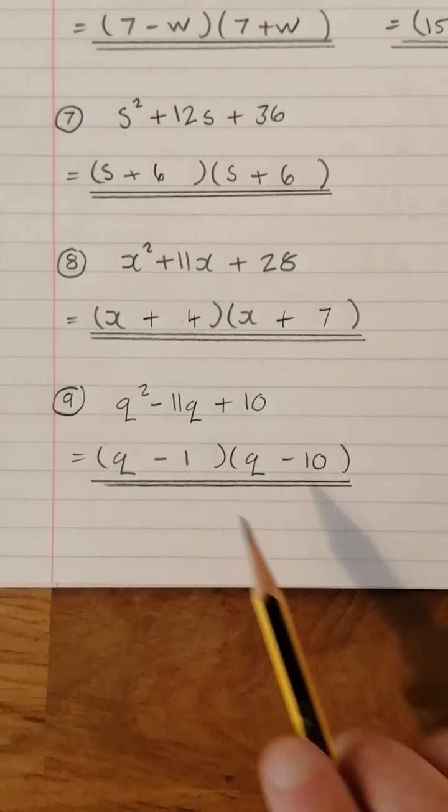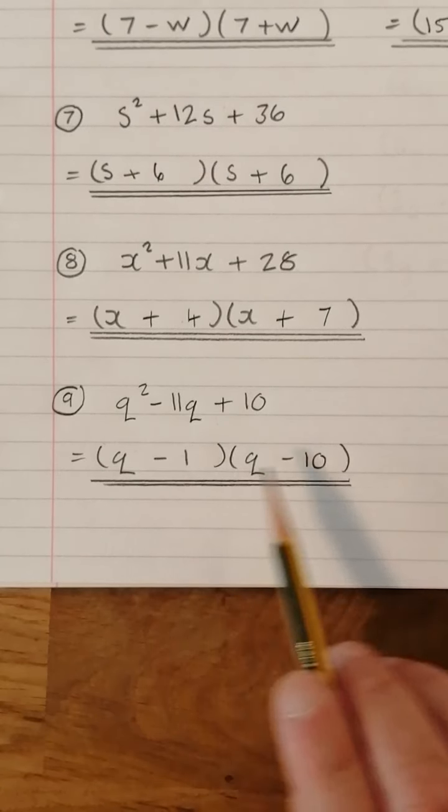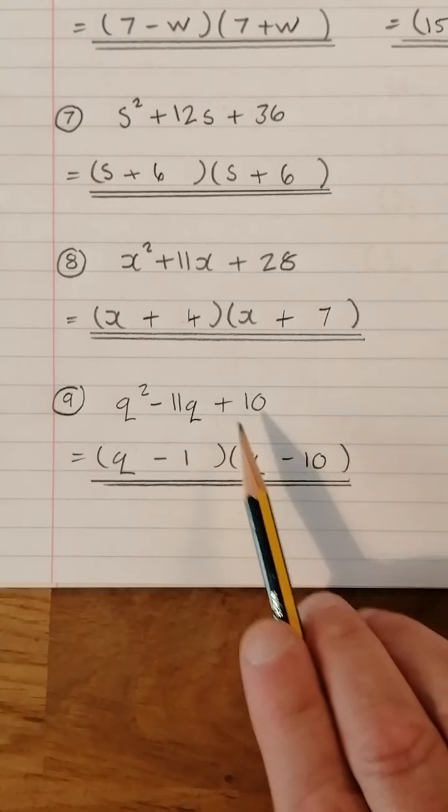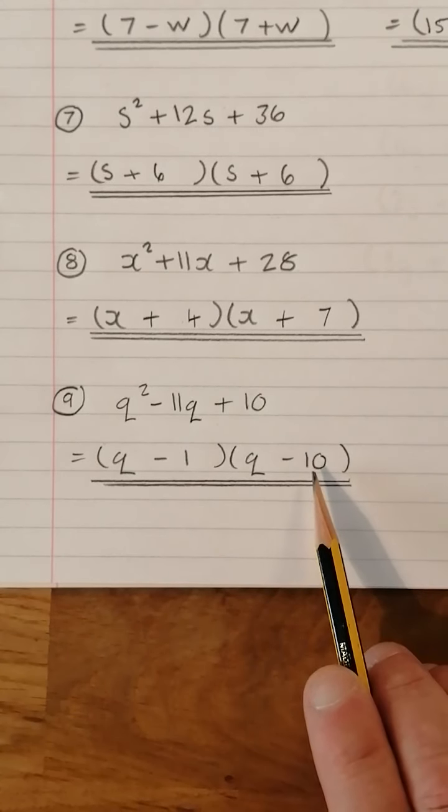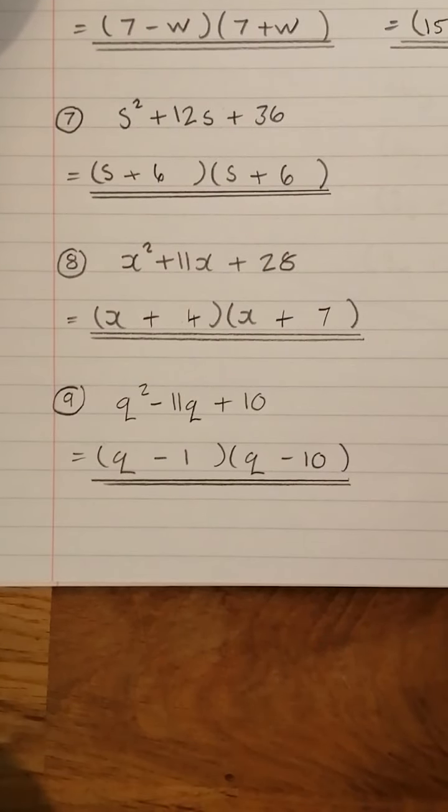Question 9, Q² - 11Q + 10. So we want two numbers that multiply to give 10, but add to give -11. -1 times -10 gives positive 10. Remember, a minus times a minus makes a plus. And -1 add -10 gives -11. So that's that one there, (Q - 1) times (Q - 10).